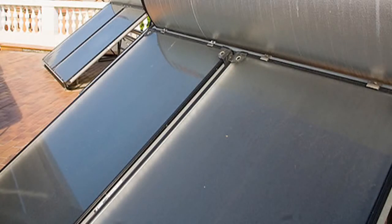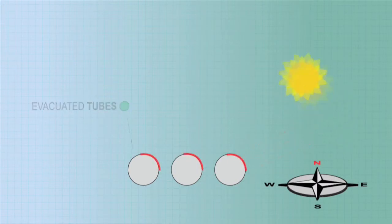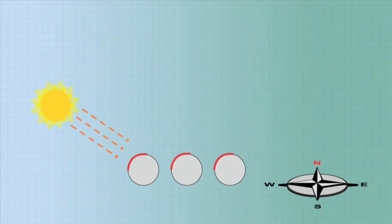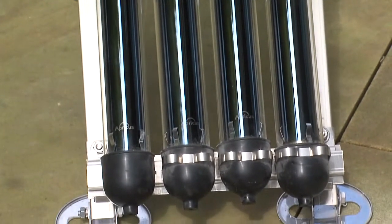There are two collector types to choose from, flat plate and evacuated tubes. Evacuated tubes have the advantage of receiving perpendicular radiation for a greater part of the day. This, combined with their vacuum insulation, means good winter performance.